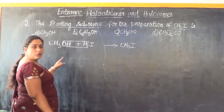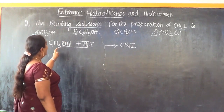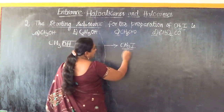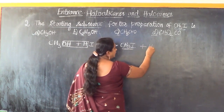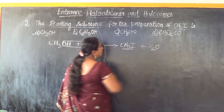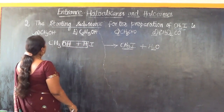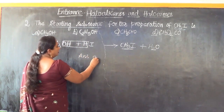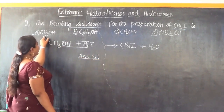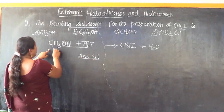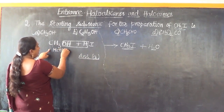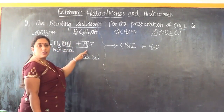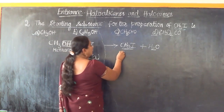Elimination of the water molecule takes place and I takes the place of OH, so we obtain iodomethane as our product. The answer for this question is option A. The starting material is methanol or methyl alcohol, which when subjected to nucleophilic substitution upon treatment with HI gives us the required product, iodomethane.